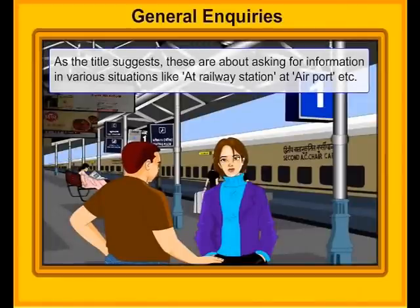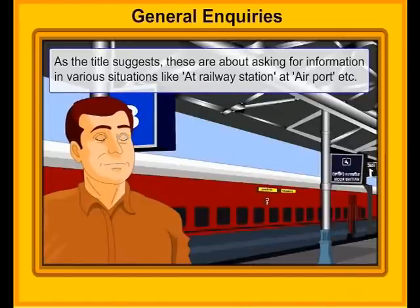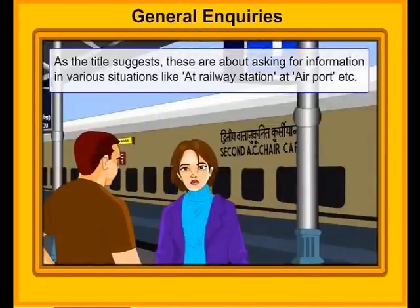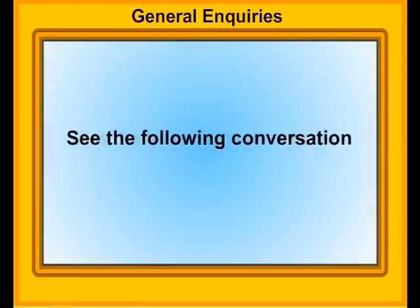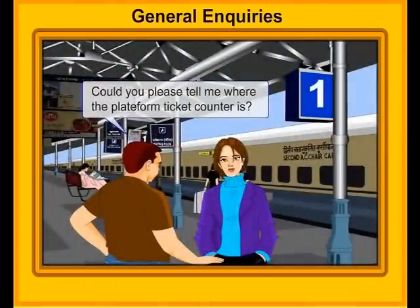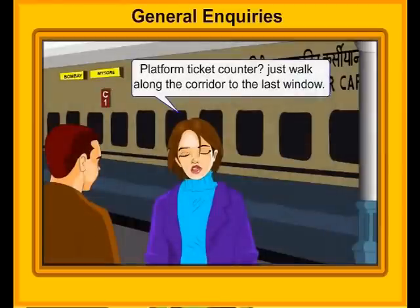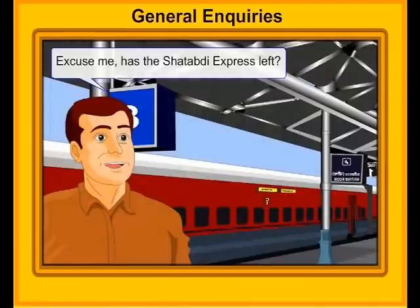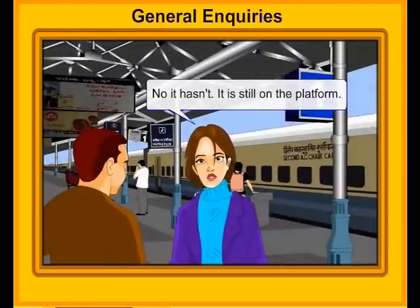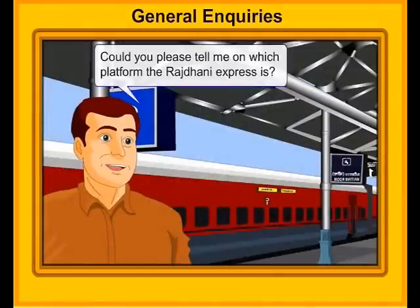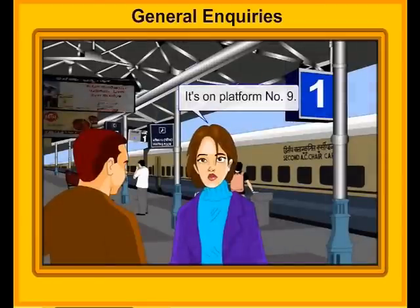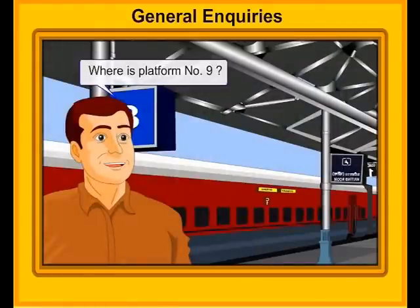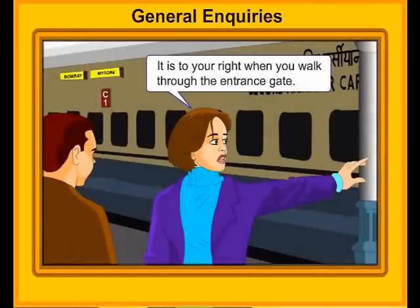General inquiries. As the title suggests, these are about asking for information in various situations, like at a railway station or airport. Could you please tell me where the platform ticket counter is? Platform ticket counter — just walk along the corridor to the last window. Excuse me, has the Shatabdi Express left? No, it hasn't. It is still on the platform. Could you please tell me on which platform the Rajdhani Express is? It's on platform number nine. Where is platform number nine? It is to your right when you walk through the entrance gate.